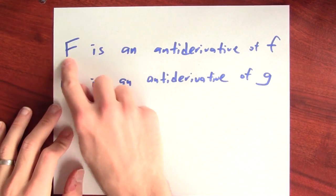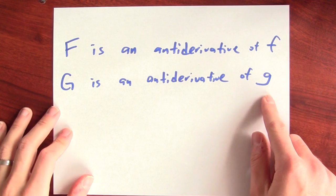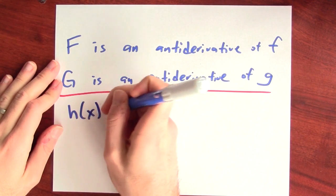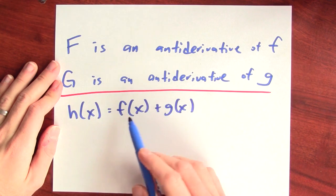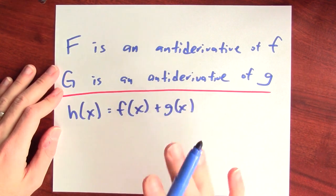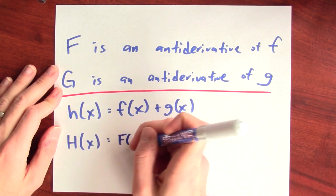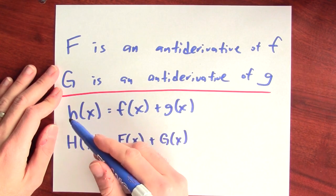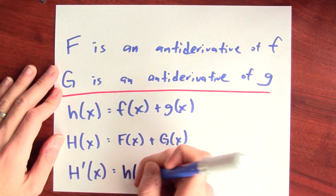By which I mean that if I were to differentiate big F, I'd get little f. And if I were to differentiate big G, I'd get little g. Now, can I find an anti-derivative for the function f plus g? Specifically, let's define a new function — I'll call it little h — and little h of x will be little f of x plus little g of x. So the function little h is the sum of f and g. Now, the claim is that this other function that I'll call big H, which is the sum of big F and big G, is an anti-derivative for little h. By which I mean that if I differentiate big H, I get little h.